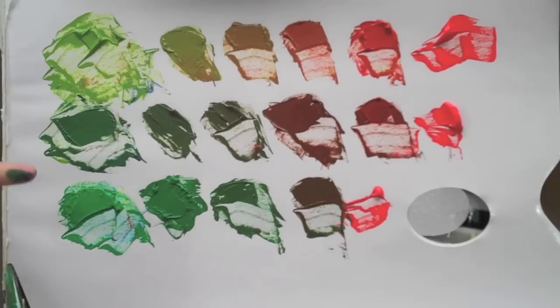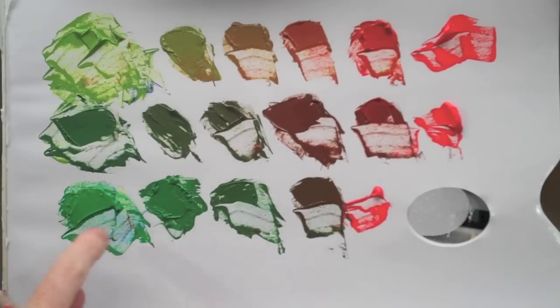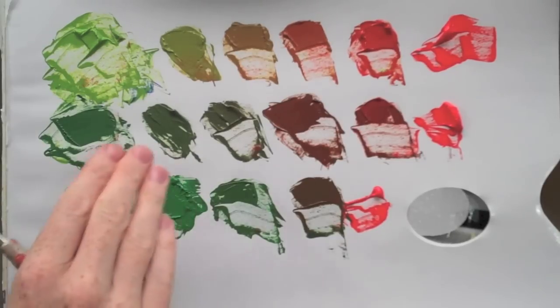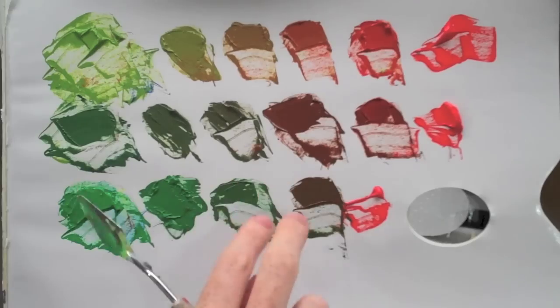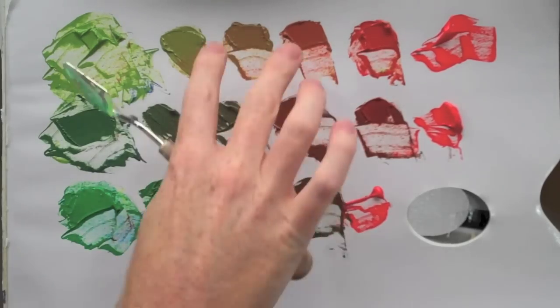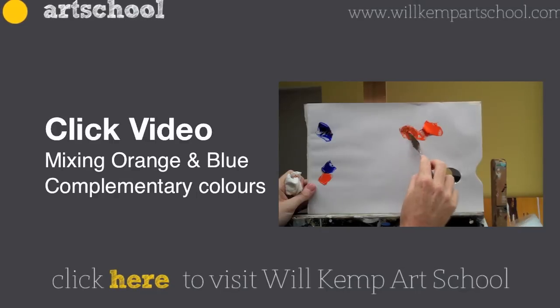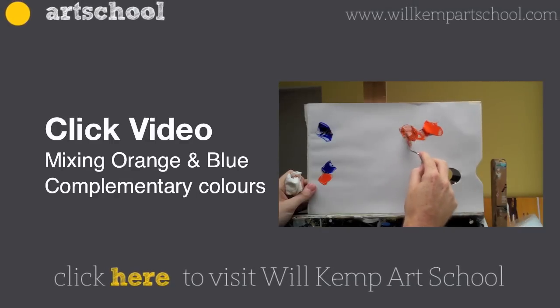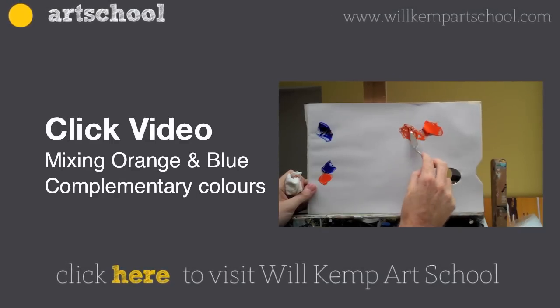So you can see how this side on the greens with a little bit of red in it doesn't change it that much. They're still a lot closer to this main green, but as we go further into the centre, everything gets a lot closer together. If you want to learn more about complementary colours and acrylic painting, click on the link below and have a look at my website.